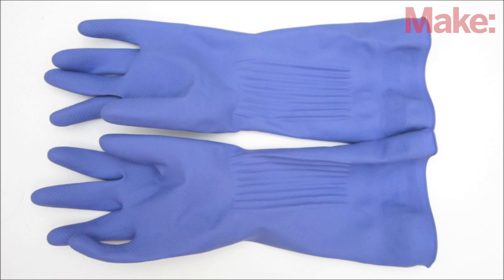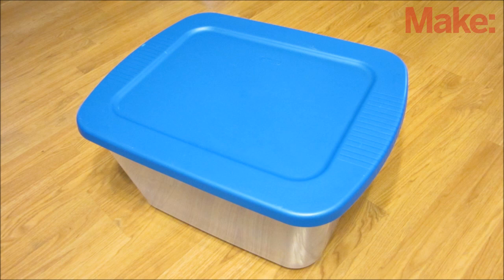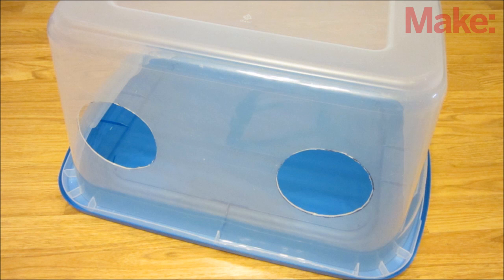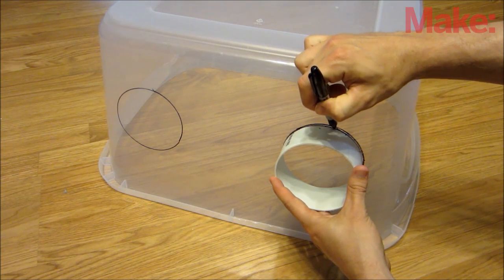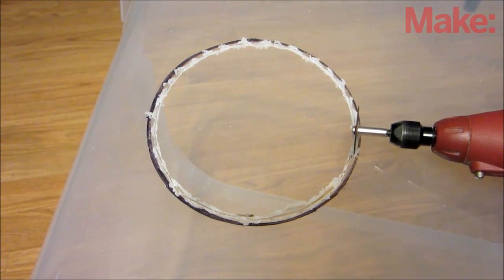To make this, you just need a pair of gloves and a clear plastic storage bin. Start by deciding where the arm ports will be located. You want them to be in a comfortable working position. Then trace a 4 inch diameter circle for each arm port, and cut them out with either a knife or rotary tool.